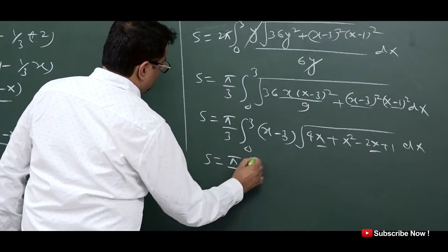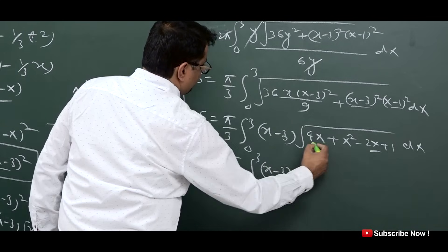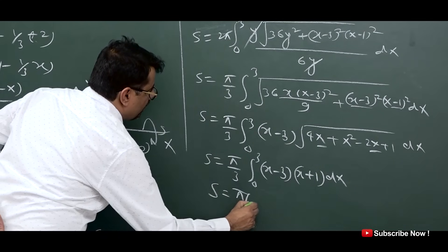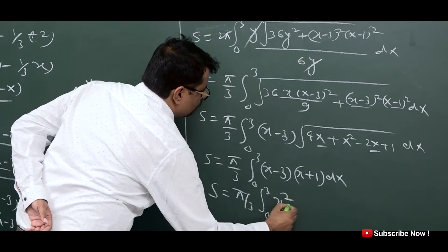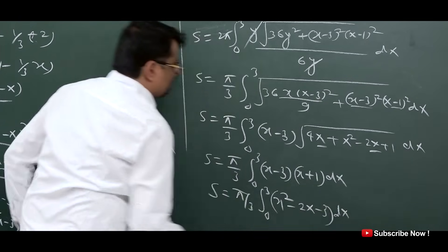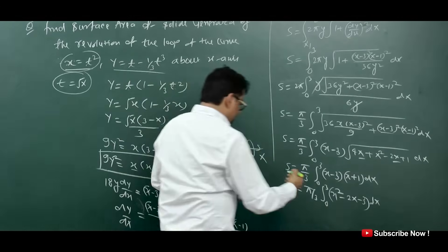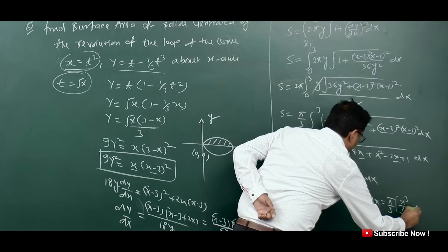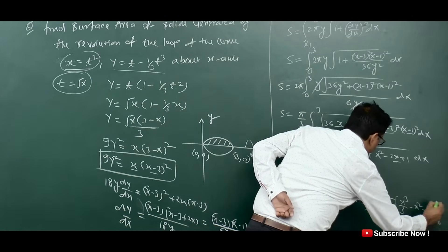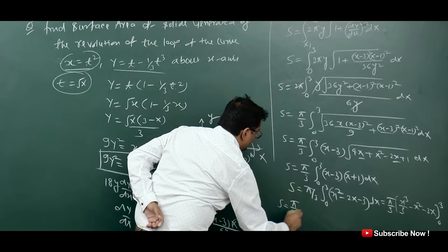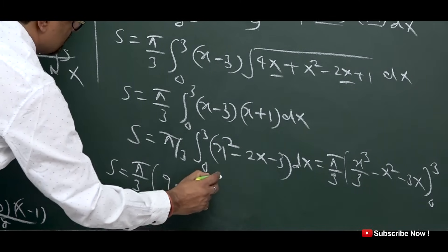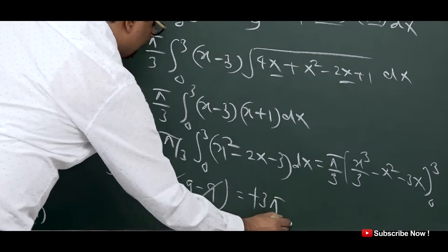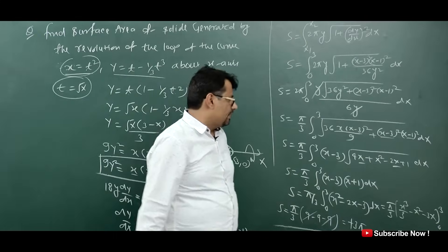So S = (π/3) ∫₀³ (x−3)(x+1) dx = (π/3) ∫₀³ (x² − 2x − 3) dx. Integrating: (π/3) · [x³/3 − x² − 3x]₀³ = (π/3) · [27/3 − 9 − 9] = (π/3) · [9 − 9 − 9] = (π/3) · (−9) = −3π. Since surface area is always positive, S = 3π is the answer. This is how we solve this question.